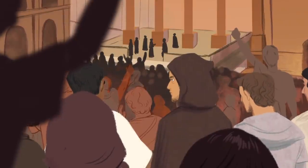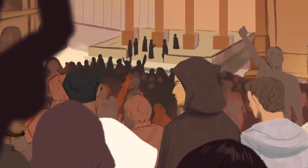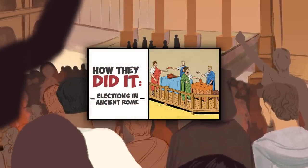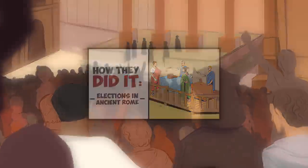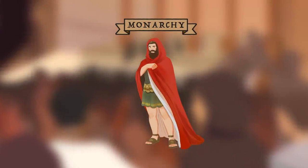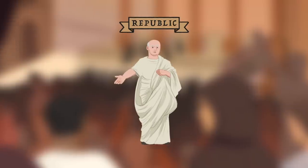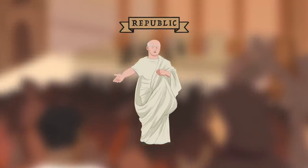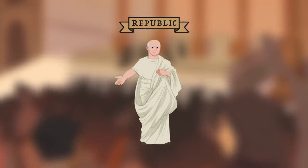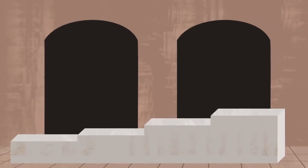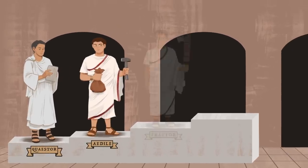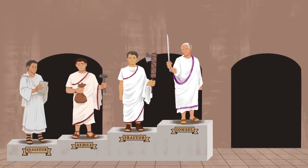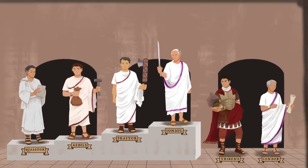Before we talk about running for office, it would help to give a refresher on the offices themselves. Following the overthrow of the monarchy in 509 BC, Rome became a republic in which the people chose their leaders. There were a host of different magistrates which might be elected in any given year. The main progression of offices was Quaestor, Aedile, Praetor, and finally Consul. Alongside these were other positions like the Tribune and Censor.